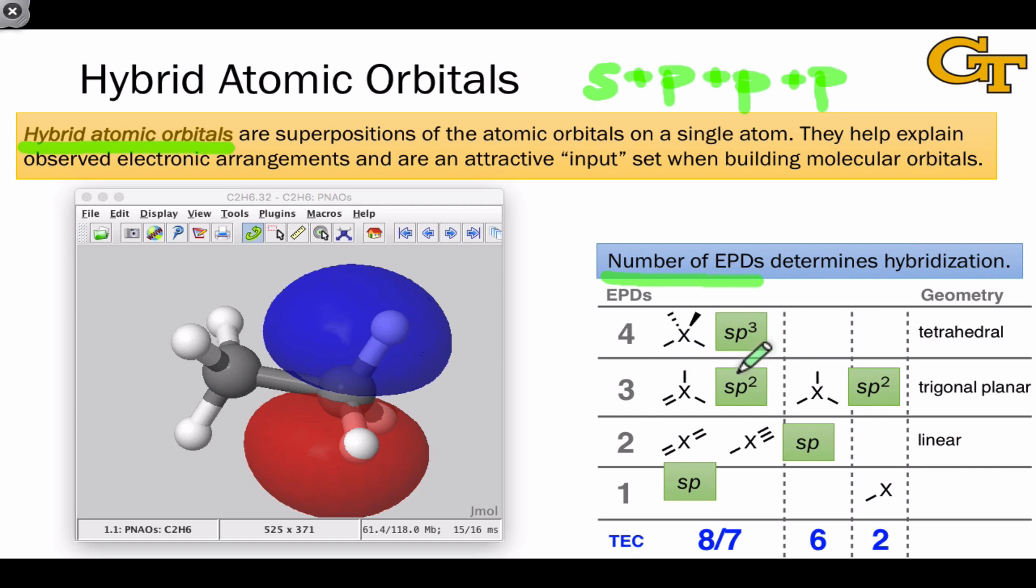So for example, the tetrahedral building block always has sp3 hybridization. We see sp2 hybridization with three electron pair domains around the atom, sp hybridization with two electron pair domains around the atom. So the number of electron pair domains determines the hybridization.